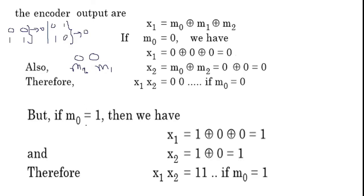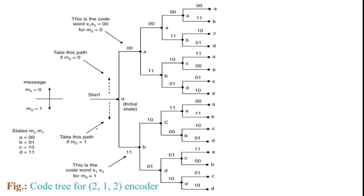Next, consider input message bit M0 = 1 with initial state 00. Substitute into the encoder equations: X1 = 1 ⊕ 0 ⊕ 0 = 1, and X2 = M0 ⊕ M2 = 1 ⊕ 0 = 1. So outputs X1, X2 = 11. M0 = 1 means the code tree goes to the downward direction with output 11. This completes the first initial state A = 00.